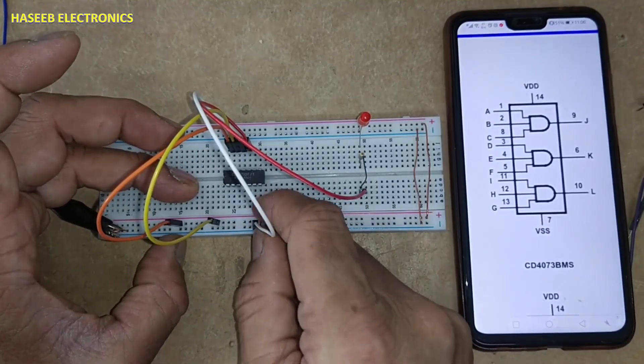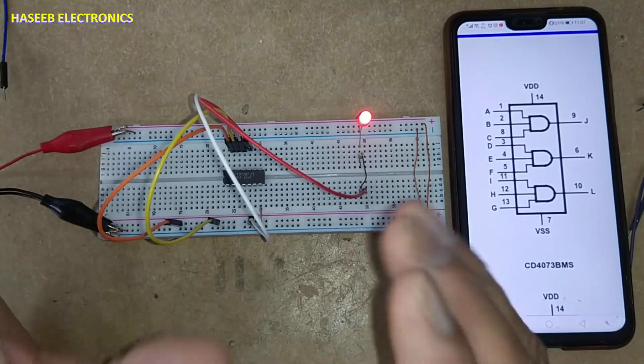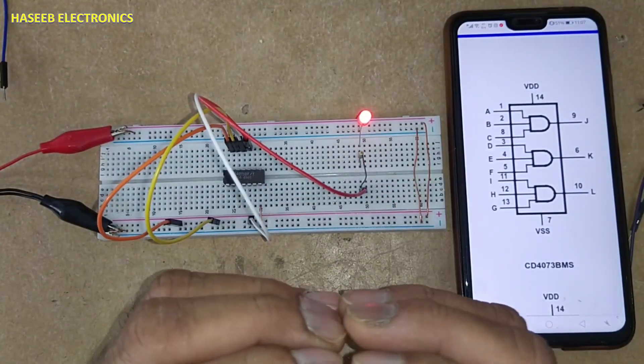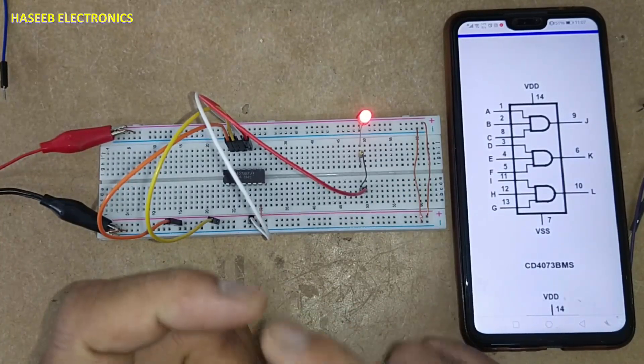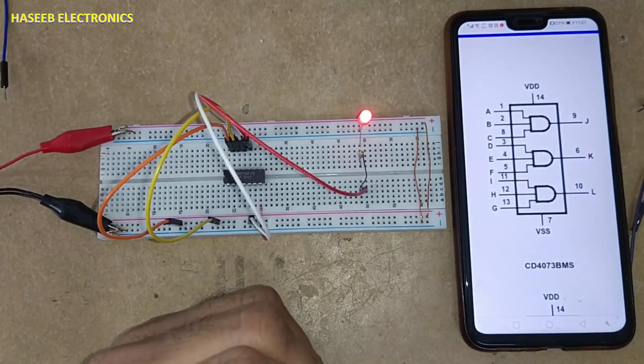This is a logic gate where when all inputs are low or anyone is low, the output is low. When all inputs are high, the output will be high. Thanks for watching.